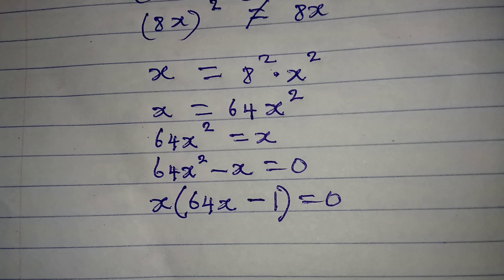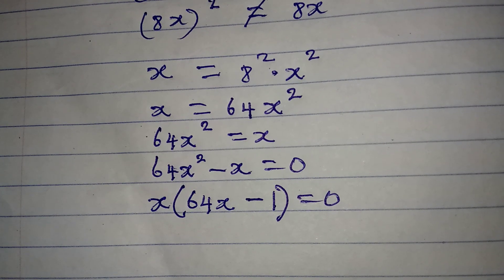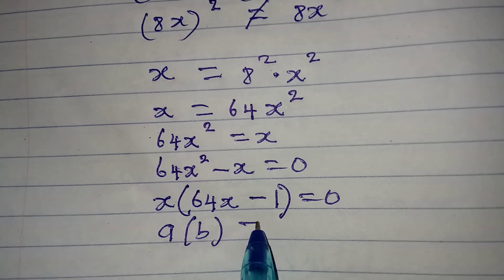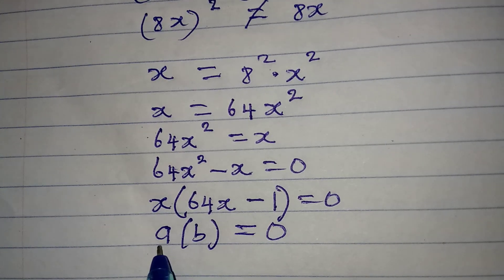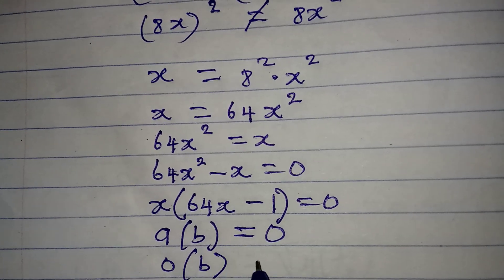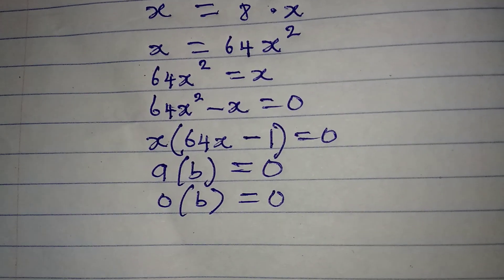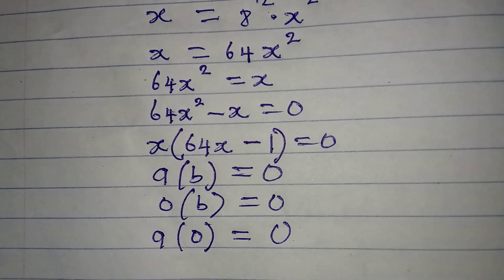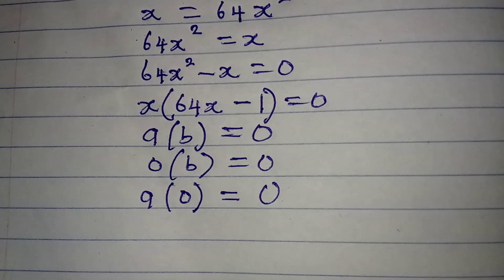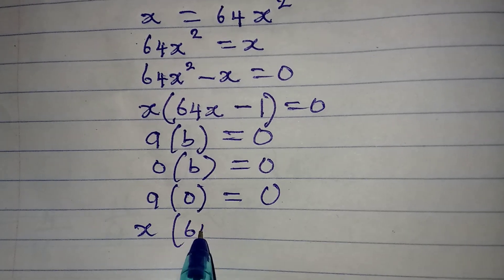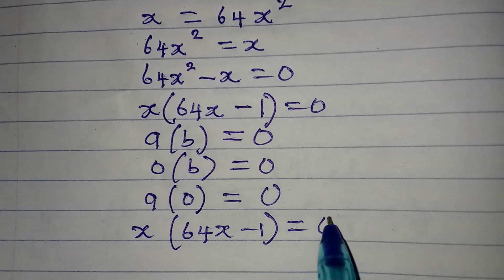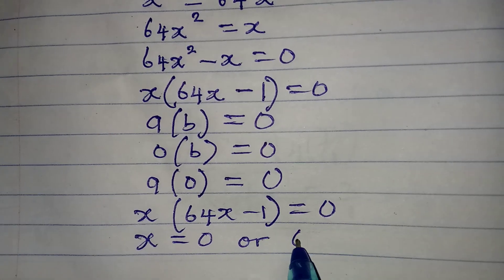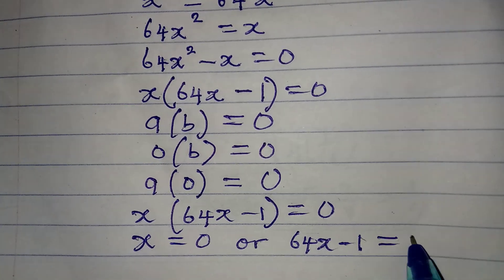We apply the zero product rule: if a times b equals 0, then either a equals 0 or b equals 0. Applying this to x times (64x minus 1) equals 0, we get either x equals 0 or 64x minus 1 equals 0.